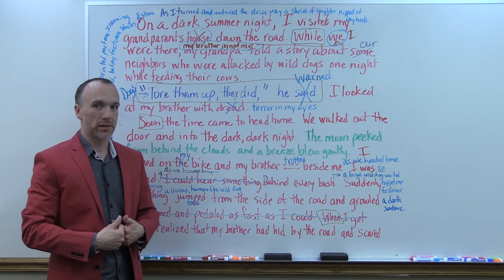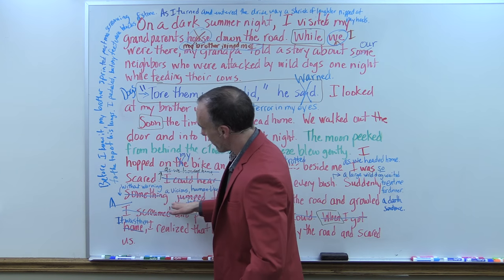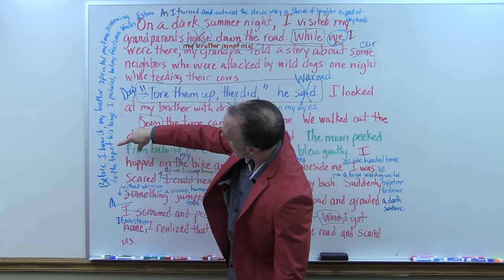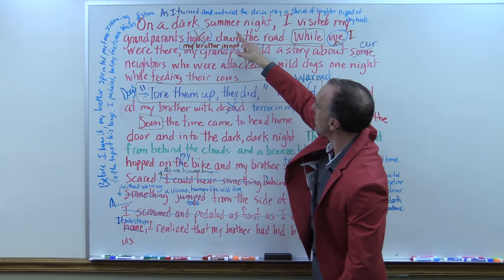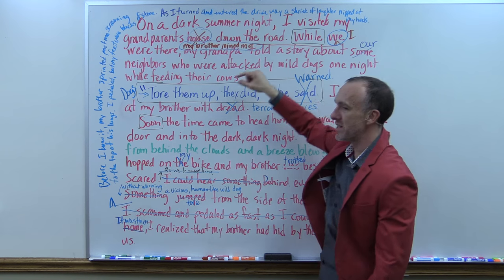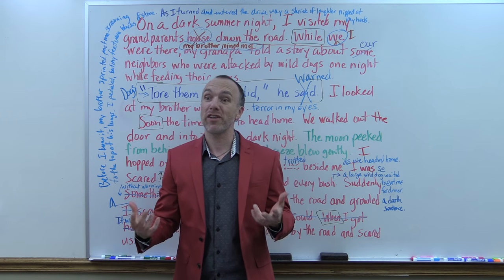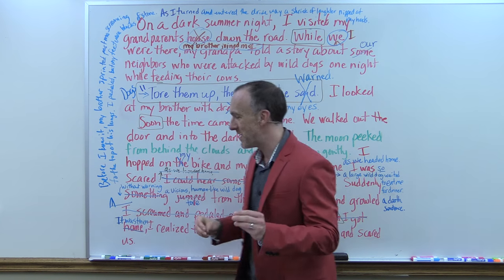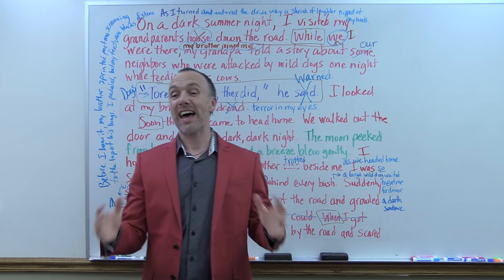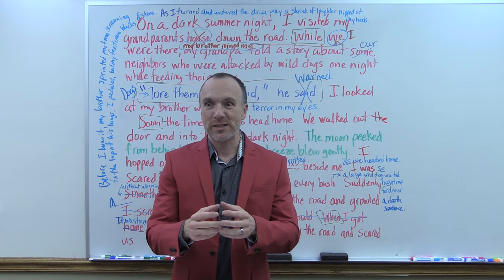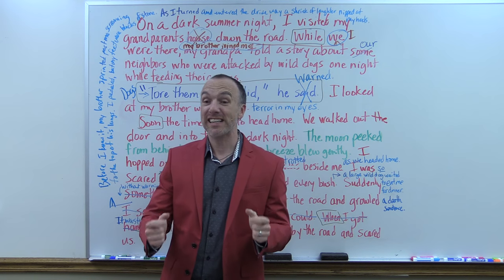I extended the climax and wrote up the side of the board: 'Before I knew it, my brother sprinted past me screaming to the top of his lungs. I peddled, but my feet were blocks of stone as I turned and entered the driveway. A shriek of laughter nipped at my heels.' There's another transition, and instead of just saying my brother started laughing, 'a shriek of laughter nipped at my heels' — more personification. Then I ended it: 'It was then I realized that my brother hid by the road and scared us.' That is what revision looks like — expand the climax, think about adding personification, look at my model, and use that to guide your own revisions.